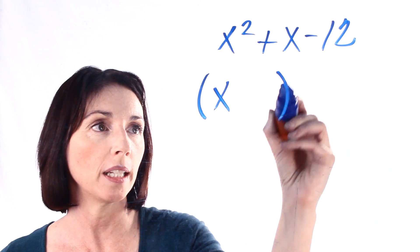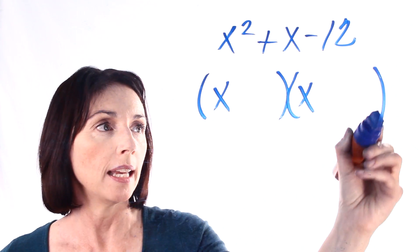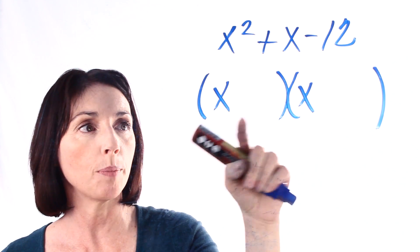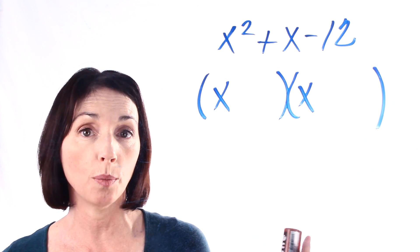Now when we factor we're going to actually break it up into two pieces. We need to get an x in both of them so that when we multiply this out we get our x squared.